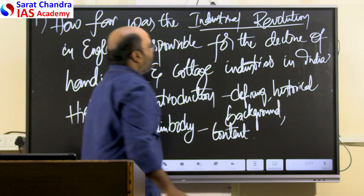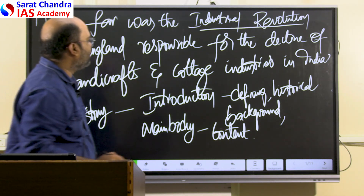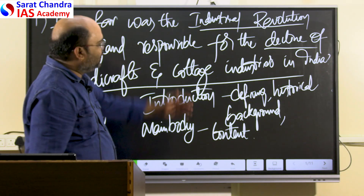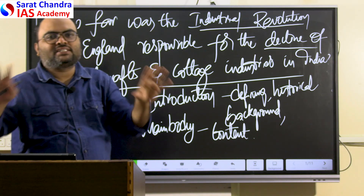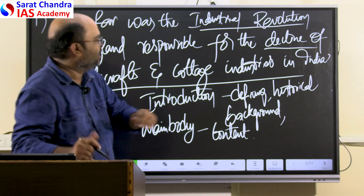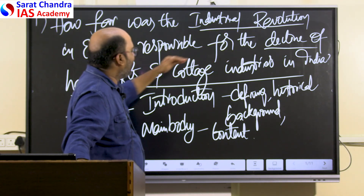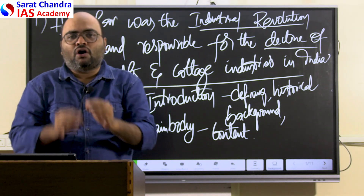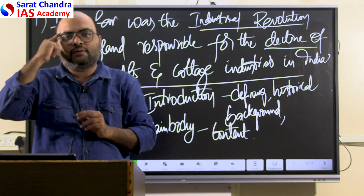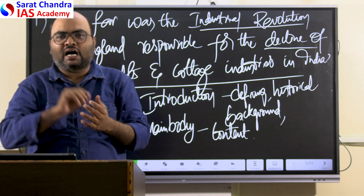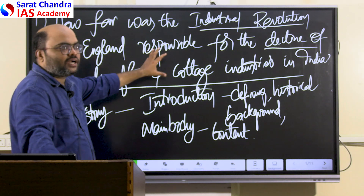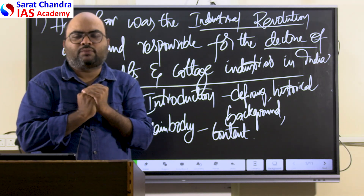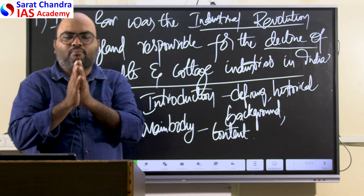First, we need to highlight the importance of industrial revolution and the declining part. What declined in India? The handicrafts and cottage industries in India had declined. So these are the three essential keywords, and we have to balance our answer among them. We need to write about the industrial revolution, the declining part, and its effect on handicrafts and cottage industries. Always keep in mind while writing any point: is it actually addressing the question or directly the keywords? If you have all the information but are not directly addressing the keywords, your answer will have no value at all.